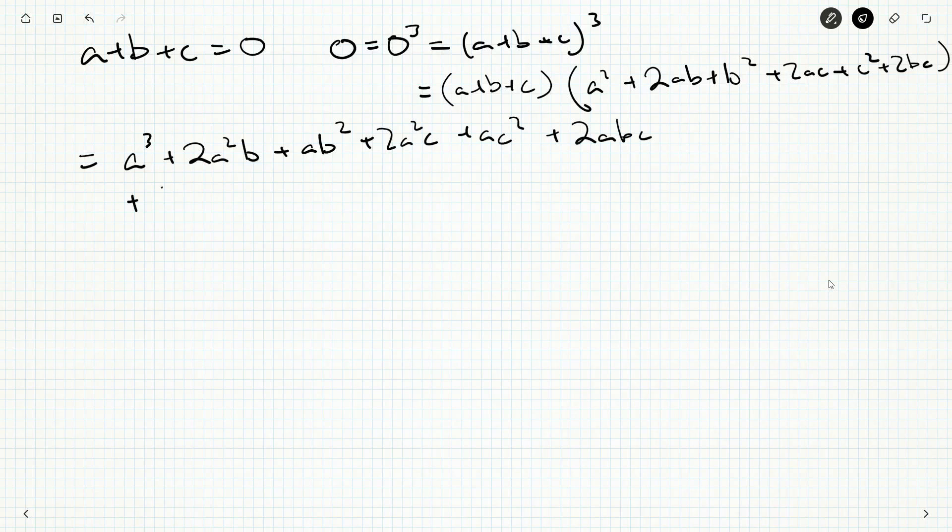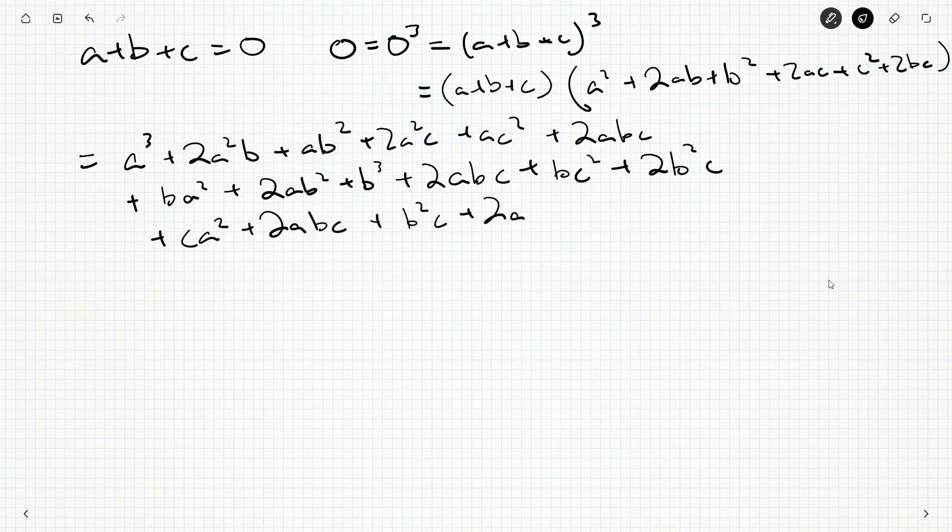And then plus b times all of this, so ba squared plus 2ab squared plus b cubed plus 2abc plus bc squared plus 2b squared c. And now we multiply c through with everything. So ca squared plus 2abc plus cb squared plus 2bc squared plus c cubed plus 2abc. Now there's a bunch of collecting like terms that we can do.